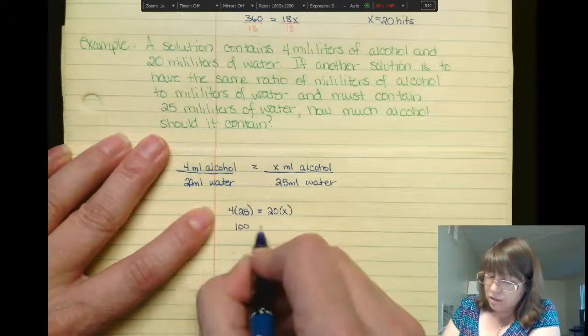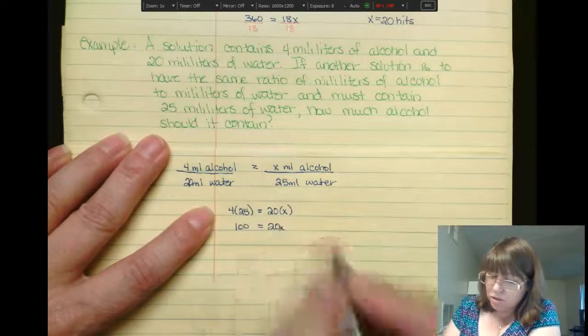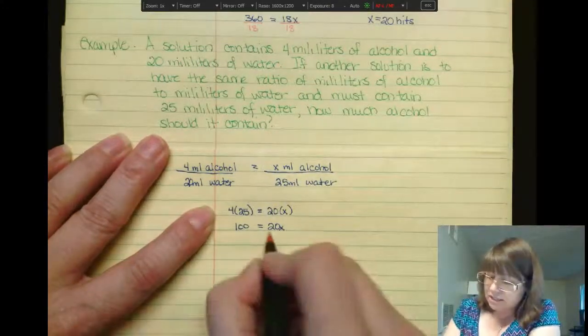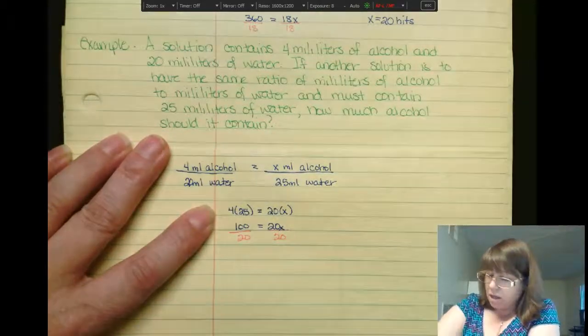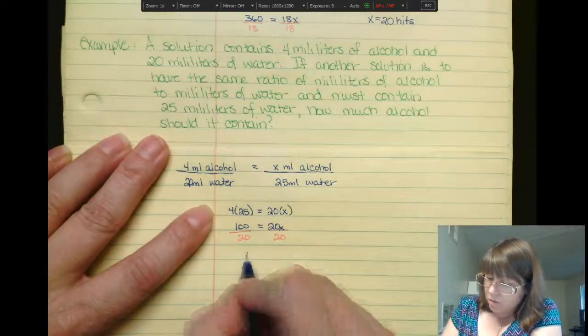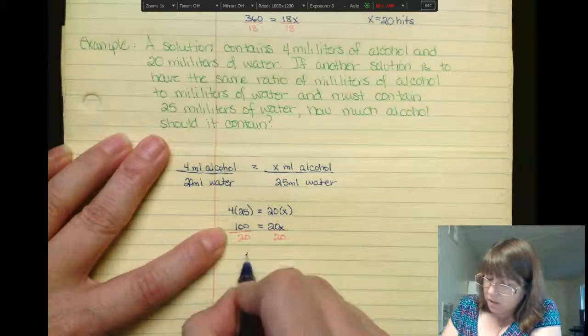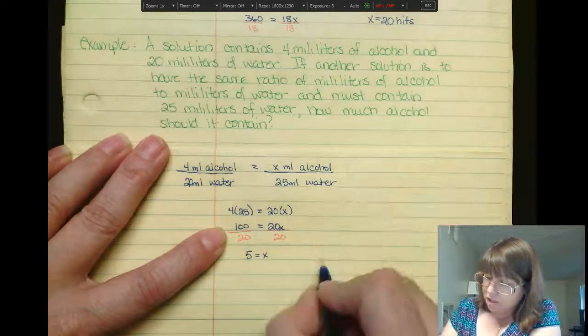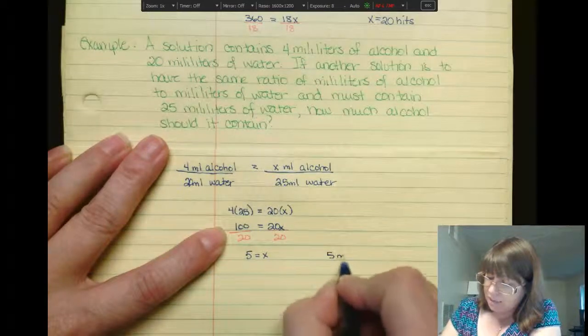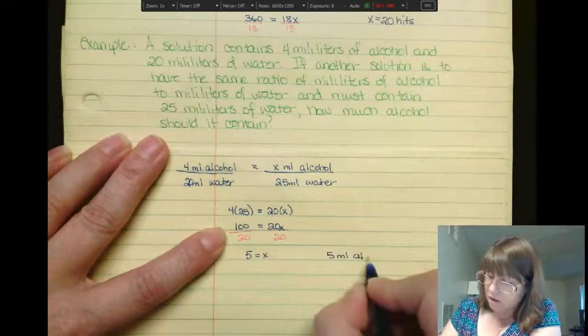I'm going to use my cross multiplication or my extremes and means to be able to solve for x. So 4 times 25 should equal 20 times x. Well, 4 times 25 is 100. This equals 20 times x. I should divide each side by 20. So how many times 20 go into 100? 5 times. So therefore, I should need 5 milliliters of alcohol.